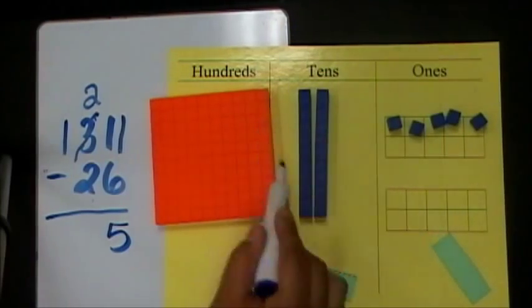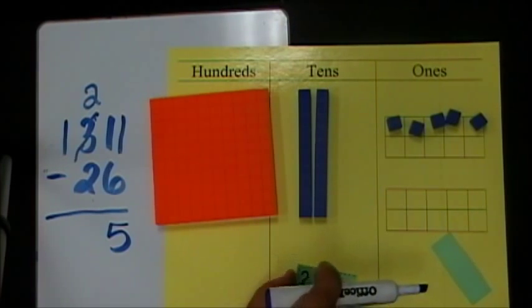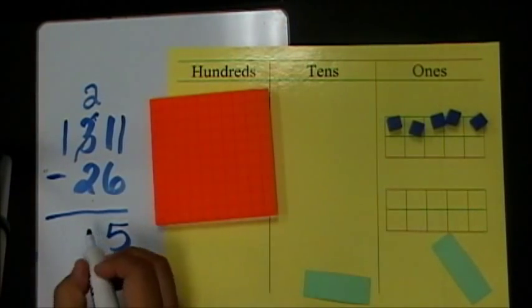I continue. I have two 10s. They want two 10s. Do I have enough? Yes. So I'm going to go ahead and take away two 10s. And I have zero 10s.